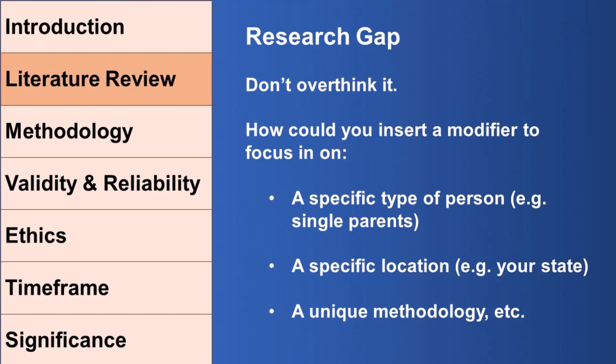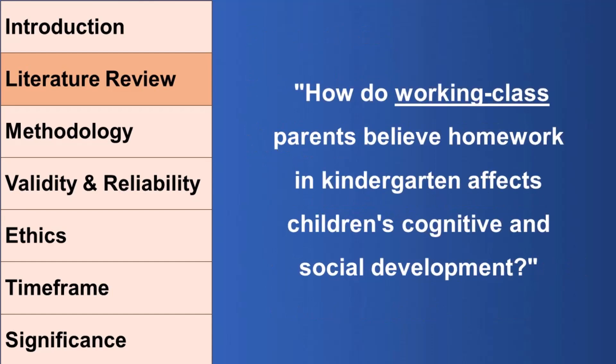For example, you can narrow your research study down to studying specific types of people, specific locations, or unique methodologies. Here is a real-life example: if someone wanted to do the question 'How do parents believe homework in kindergarten affects children's cognitive development?', that study's probably already been done. But we can add a modifier like 'working class parents,' and there's probably no studies that look specifically at working class parents — giving your study a unique contribution to the literature.